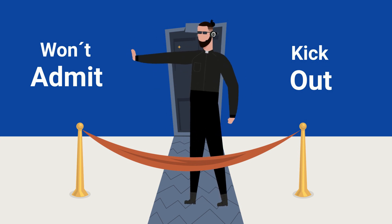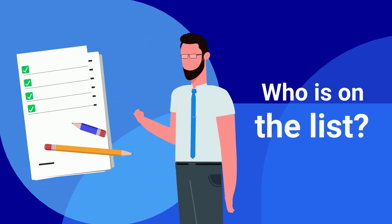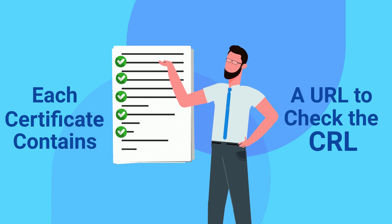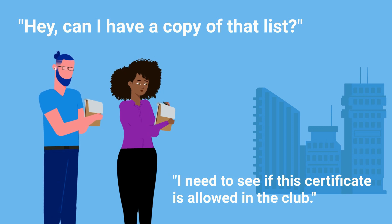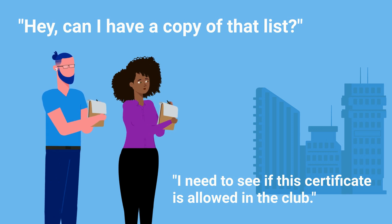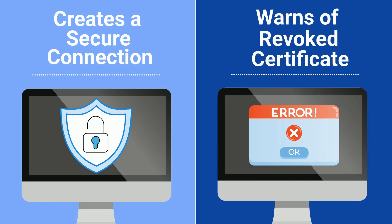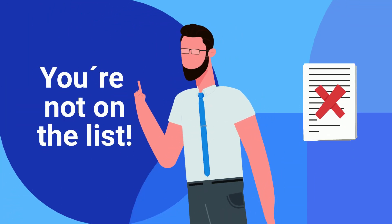How do web browsers and other devices know who's on the blacklist? Each certificate contains a URL that is used to check the CRL. When you visit a site, your browser discreetly asks, "Hey, can I have a copy of that list? I need to see if this certificate is allowed in the club." Depending on what it finds in the CRL, your browser either creates a secure connection or warns you about a revoked certificate — which is a bit like saying, "Sorry, you're not on the list."